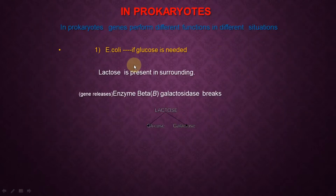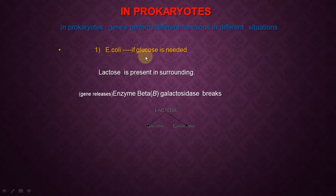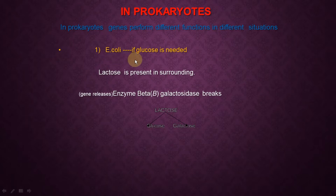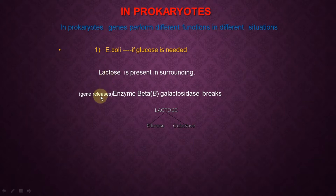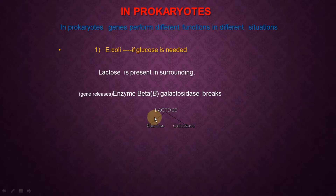In prokaryotes also, gene expression is controlled everywhere. Consider one example: E. coli bacteria. If glucose is needed by this bacteria and lactose is available in the surrounding, the gene releases one enzyme called beta-galactosidase. This beta-galactosidase breaks lactose into glucose and galactose, and hence glucose becomes available to the bacteria. Here also, genes are playing a very important role.